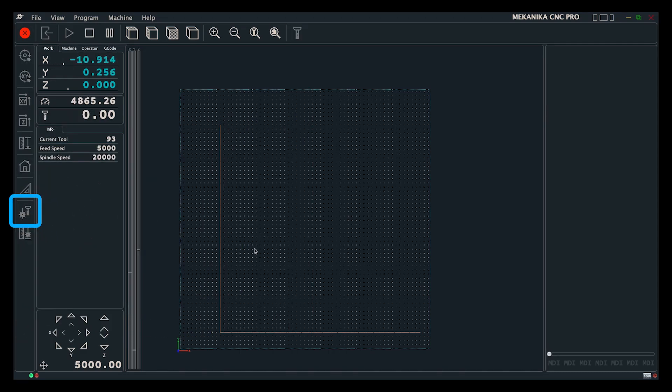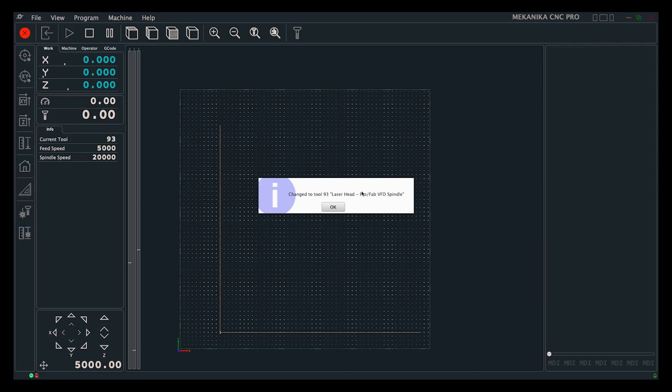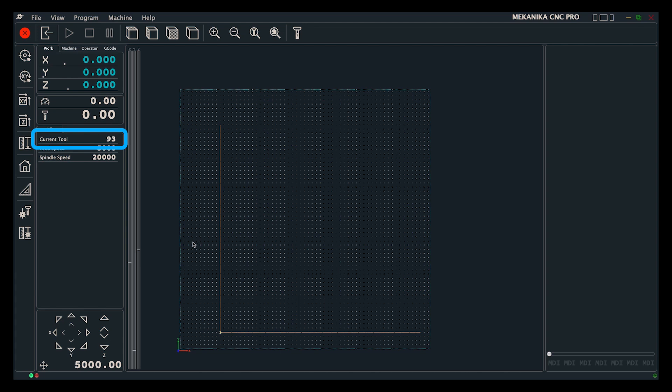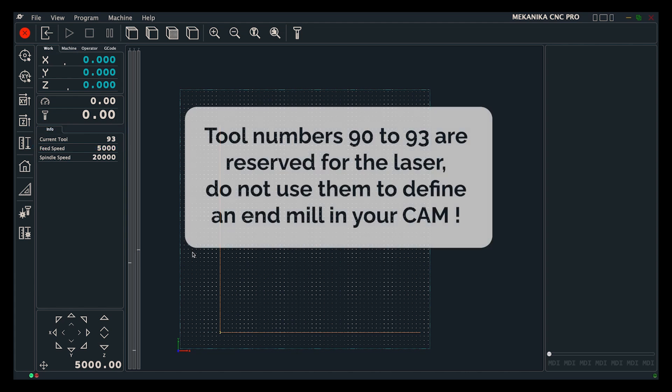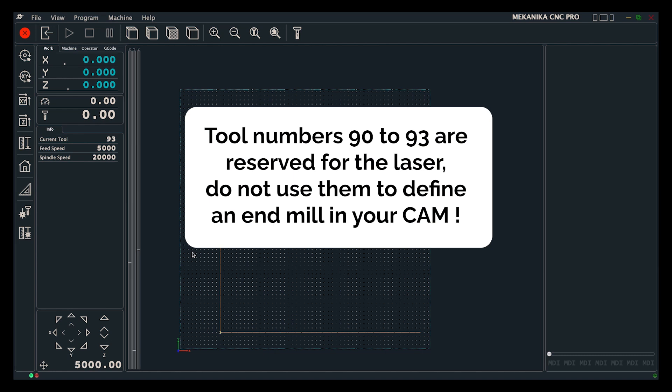After being notified by a pop-up window, you will see in the info panel that the tool number has changed to a number between 90 and 93 depending on your machine model. These numbers are reserved for the laser and should not be used in your G-code to define an end mill.